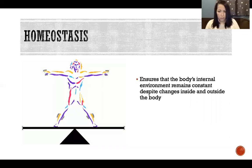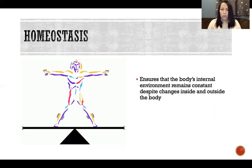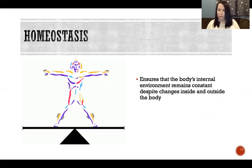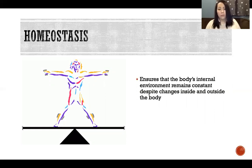Homeostasis ensures that the body's internal environment remains constant despite changes inside and outside the body. Our environment is always changing around us — the temperature might be getting warmer or colder, we might have access to food or we might not. So we need to be able to manage our blood sugar, blood oxygen levels, body temperature, and many other conditions in the body to make sure that we can survive.